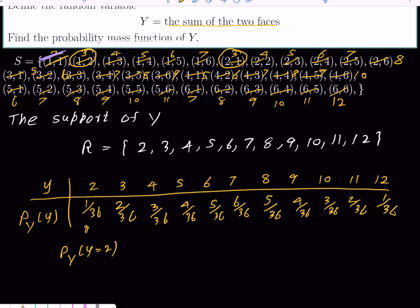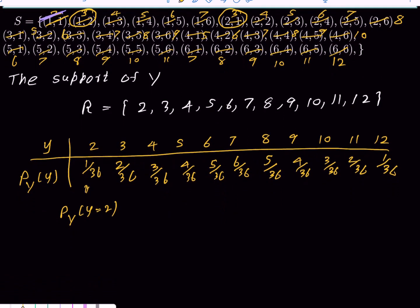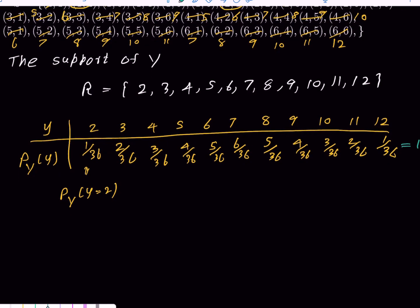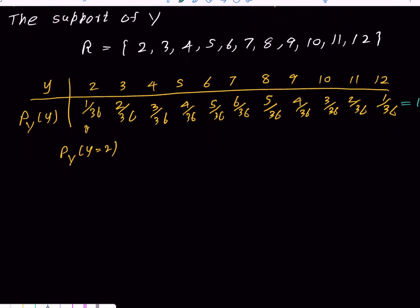How do we check if this is correct? Add these probabilities. This should be 1 if this is a legitimate probability model. Yes, it is 1.